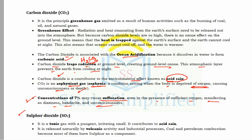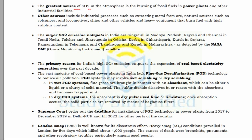Sulfur dioxide (SO2) is a toxic gas with a pungent and irritating smell. It contributes mainly to the acid rain phenomenon. It is released naturally by volcanic activities and by human activities such as industrial processes, coal burning, fossil fuel burning, and petroleum combustion — since sulfur is a major component of fossil fuels. The greatest source of SO2 is the burning of fossil fuels in power plants and industrial facilities. Other sources include metal extraction from ore, volcanic activity, and vehicles burning high-sulfur-content fuels.